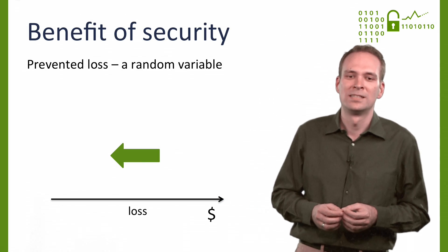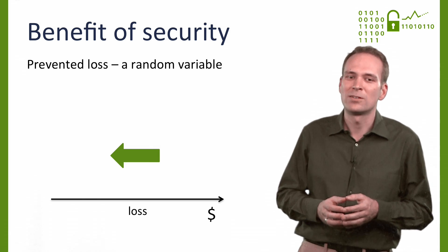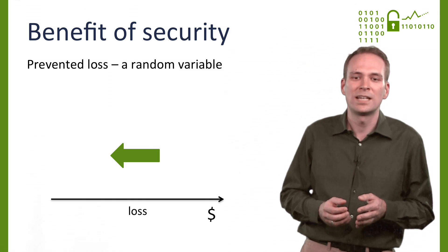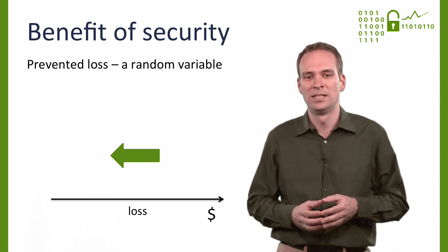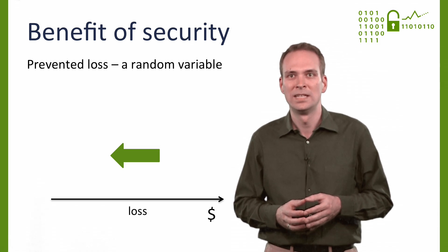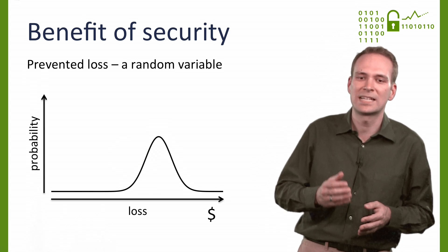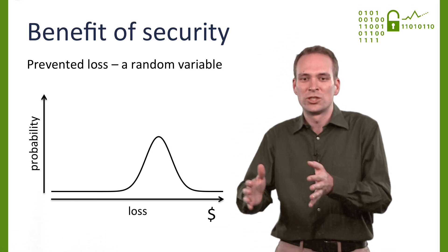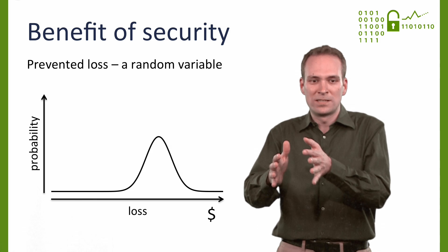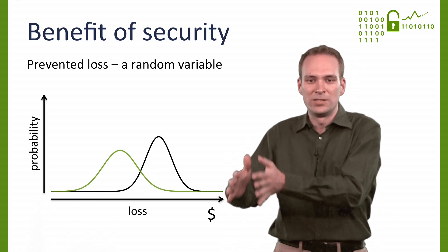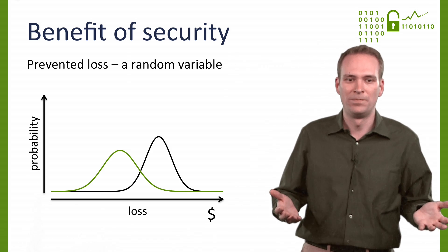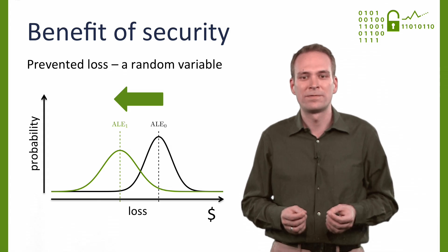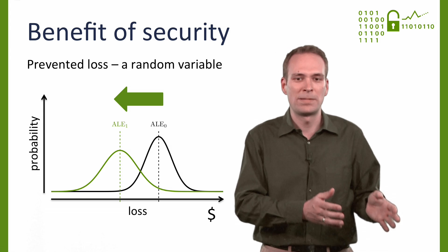The benefit of a security investment is not even deterministic. Benefits of security arise from prevented losses, but whether and how much an organization loses with and without security investment depends on exogenous factors, notably attacker behavior. A common simplification in the security investment literature is to model attacker behavior as a random variable, so that the benefit of a security investment emerges as the shift of probability mass between the loss distribution without security investment and the loss distribution with security investment. Distributions are hard to compare, so we project them to scalars, looking at moments such as the mean. This leads us to a definition of security benefits as the expected prevented loss.